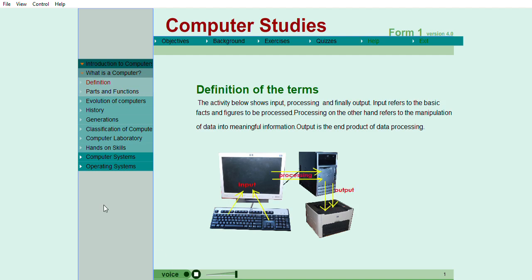A computer is an electronic machine that uses instructions or programs to accept data input given to it and to process it to produce information or output.